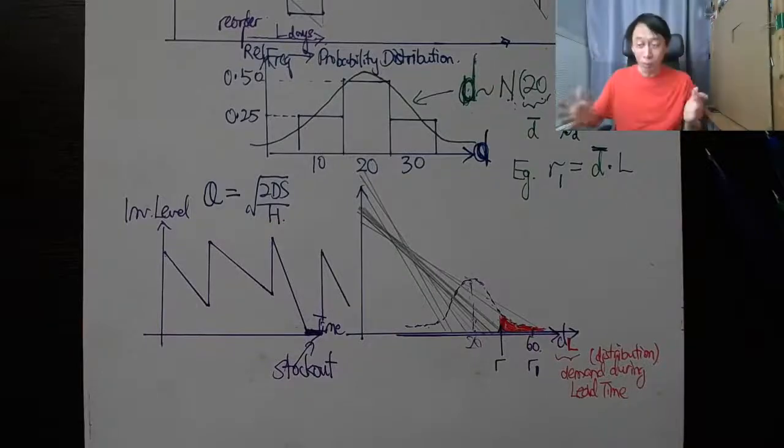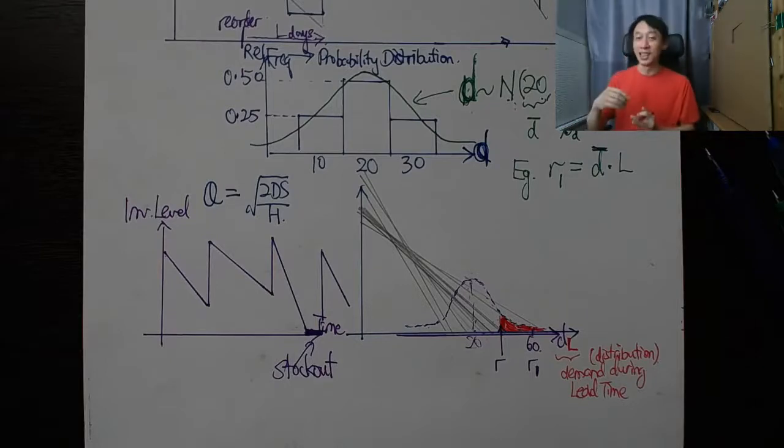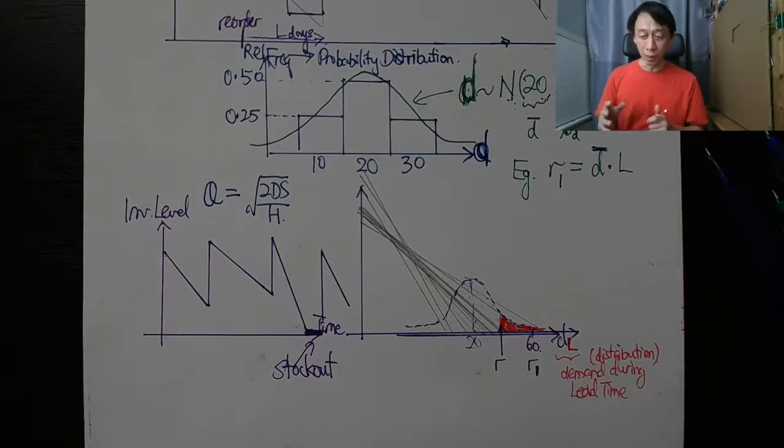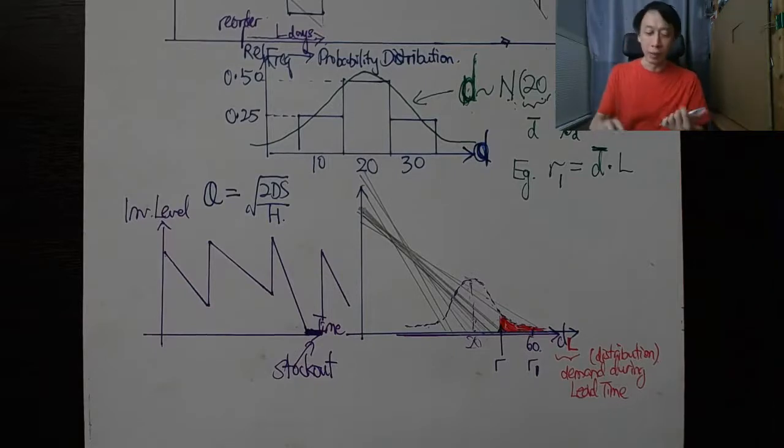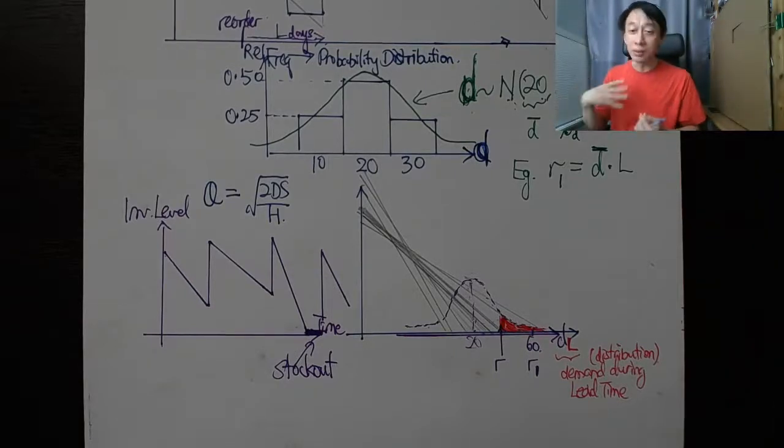Demand is a normal bell curve, so demand during three days instead of one day is not going to be a constant. Using statistics, we will have to derive what is the distribution of demand during three days lead time.